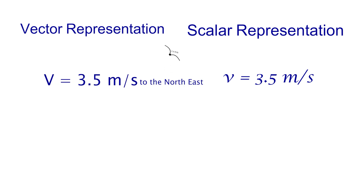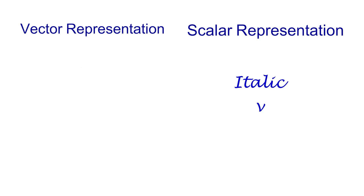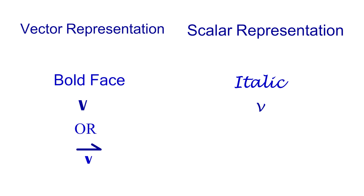Another way to distinguish vectors from scalars is by drawing an arrow above the abbreviation for the vector quantity. To summarize: a scalar quantity is represented by writing it in italic, while a vector quantity is represented either by writing it in boldface or with an arrow on top of the abbreviation.